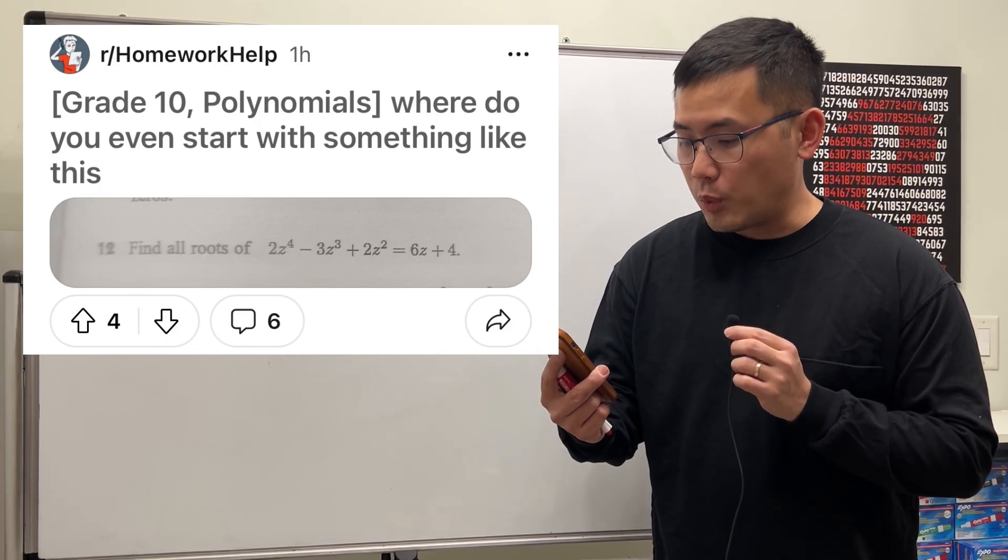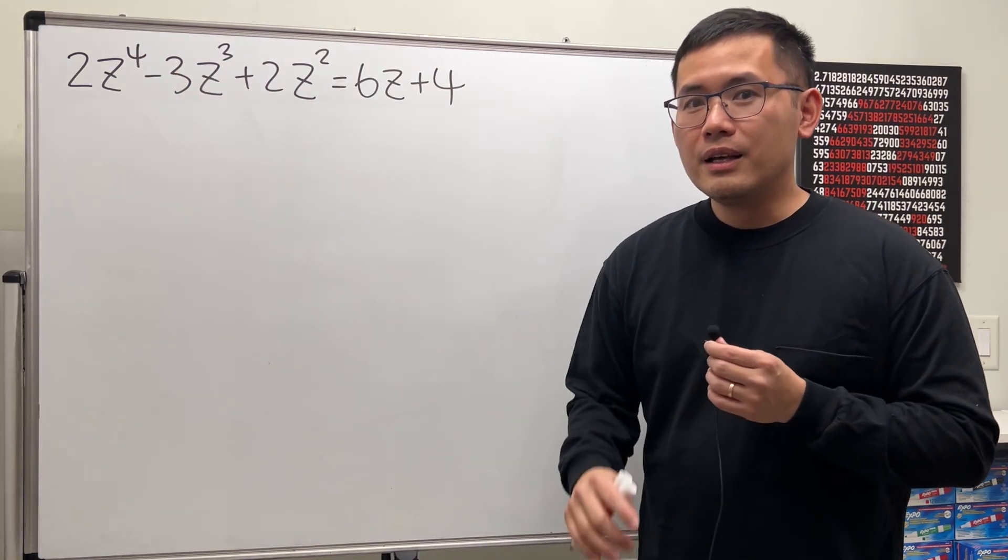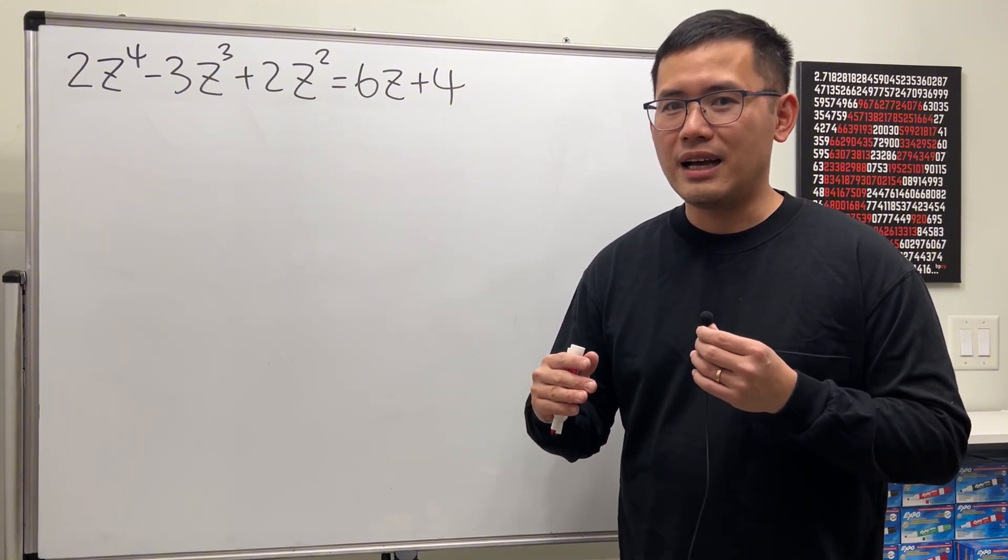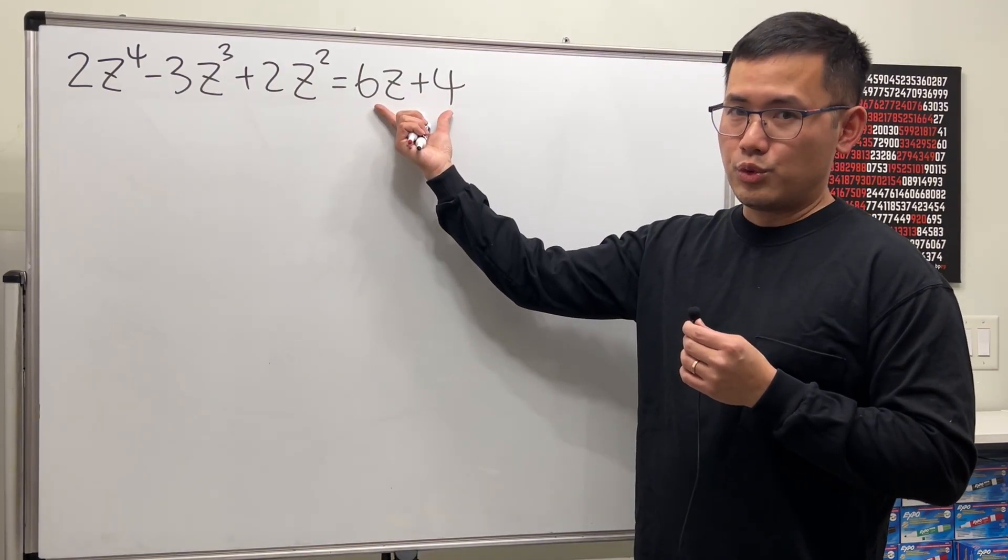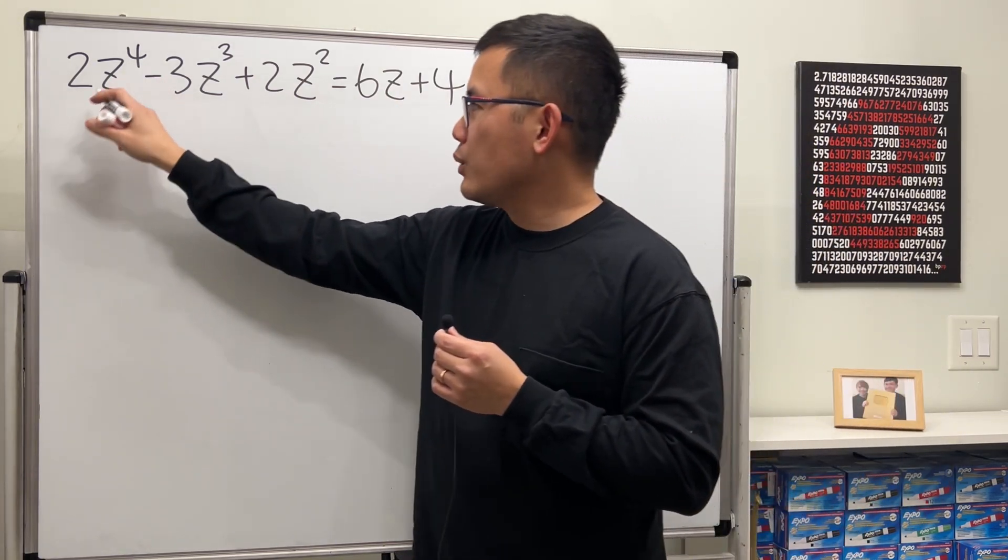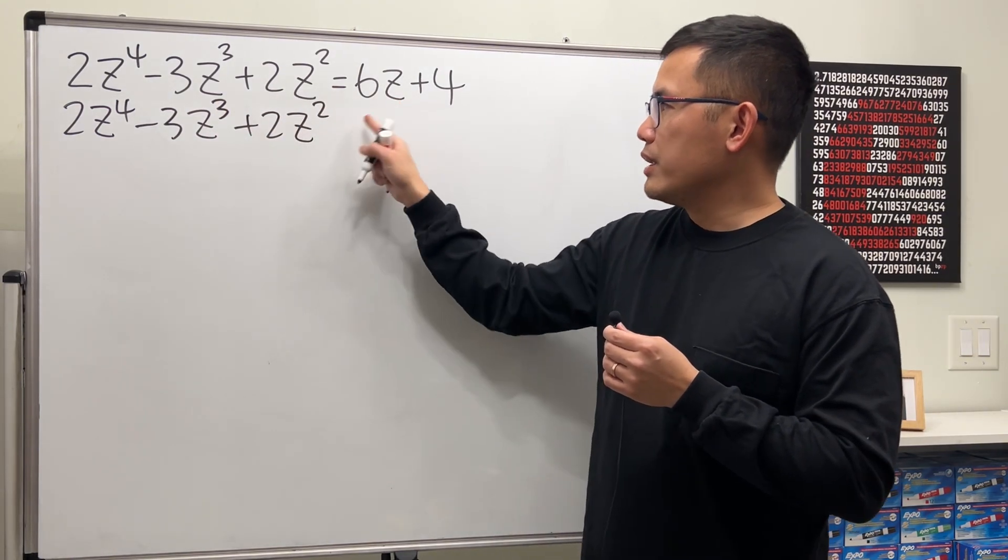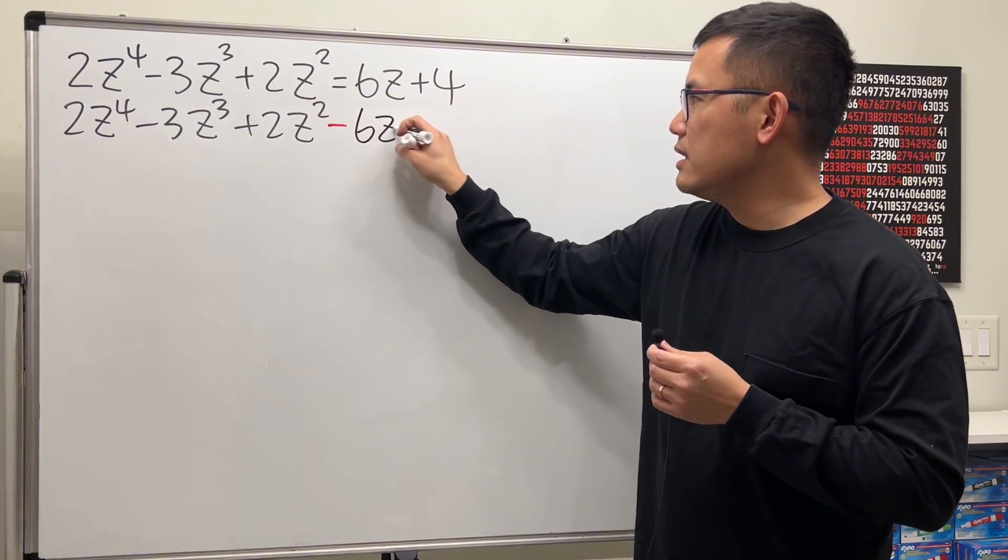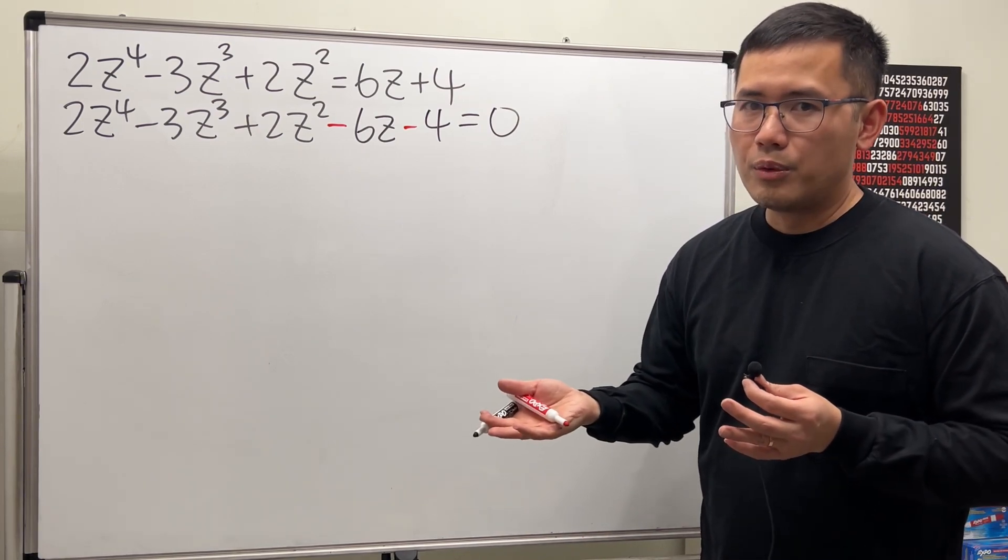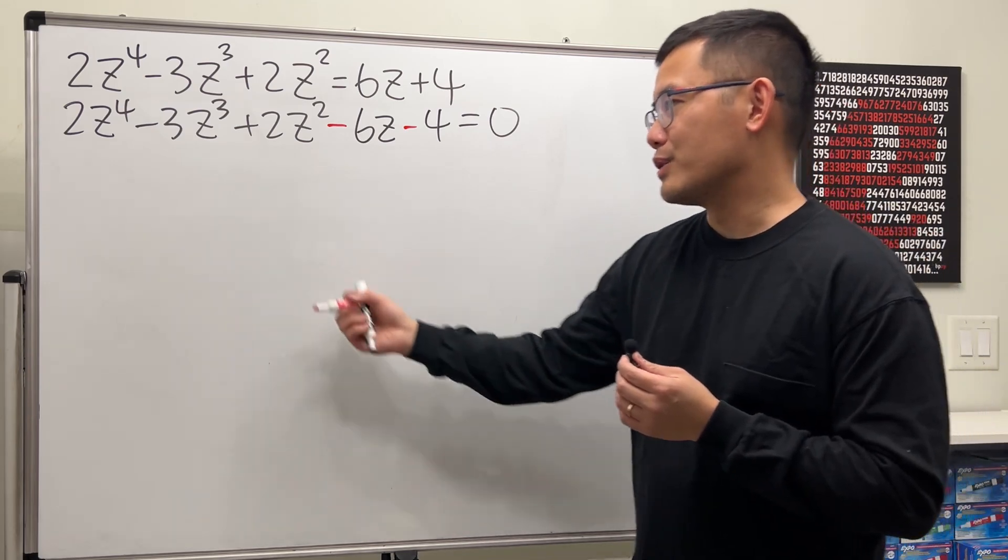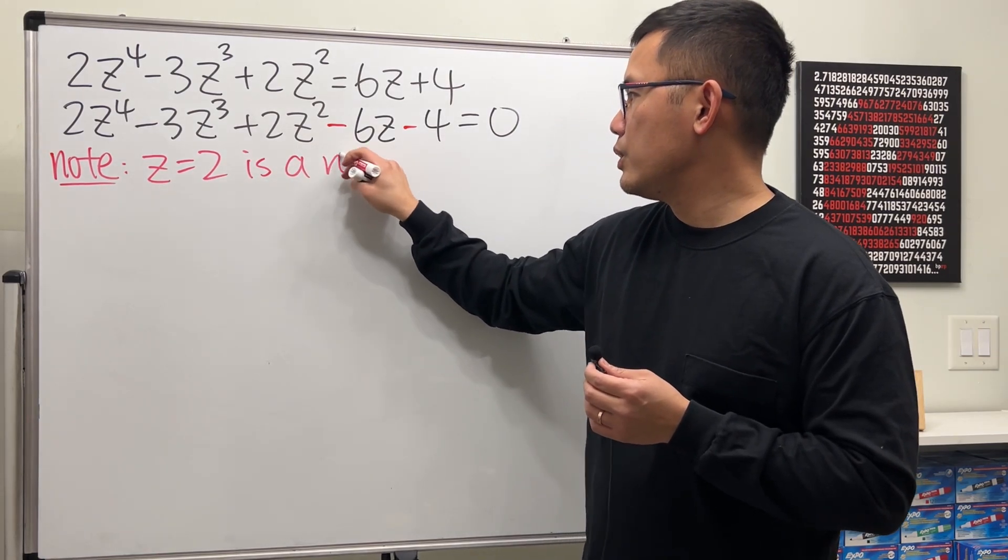Great time polynomials, where do we even start with something like this? Notice we have z to the fourth power. Whenever we're trying to solve a polynomial equation that has degree 2 or more, this is a fourth degree, we would like to make one side equal to zero first. Let's bring these two terms to the other side. So we will get 2z⁴ - 3z³ + 2z² - 6z - 4 = 0. Because you told me z equals 2 is a root, I'll just write that down. Note: z = 2 is a root.